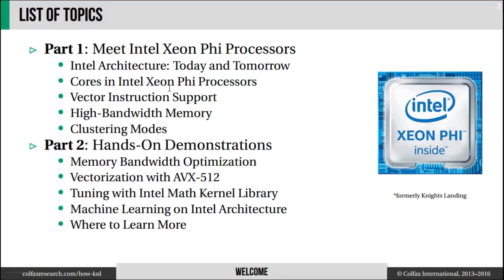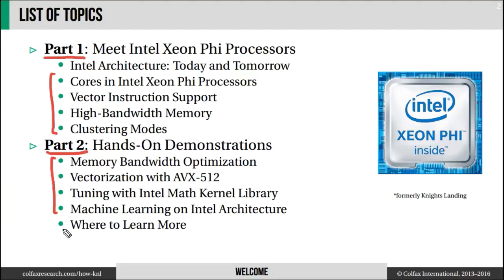This workshop comprises two parts. In part 1, I will talk about the organization of Intel Xeon Phi processors and what it means to the programmer. In part 2, I will run several hands-on demonstrations on performance optimization for this platform. Because this workshop is not long enough to discuss all of the details, in the last episode, episode 10, I will give you pointers on where to learn more.